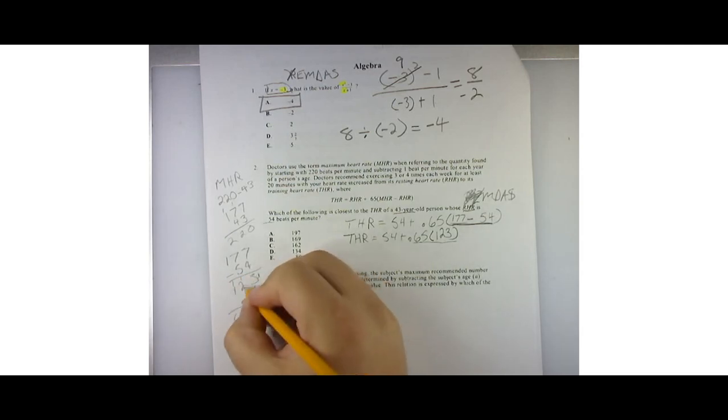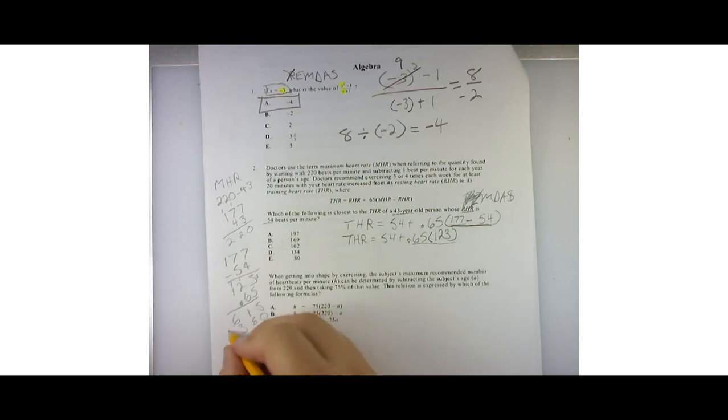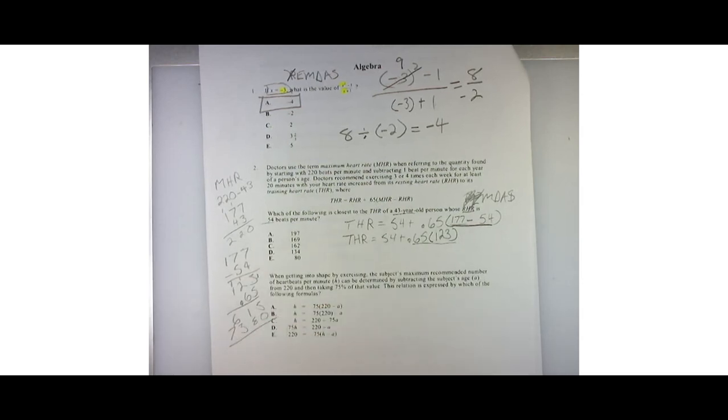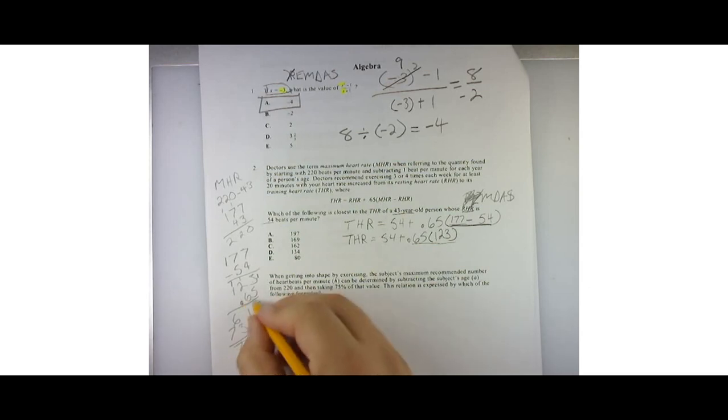6 times 2 is 12, plus 1 is 13, carry the 1. 6 times 1 is 6, plus 1 is 7. Okay, so now I'm going to add all these up. I've got 5, 9, 9, 7. I'm going to move the decimal over two spots.